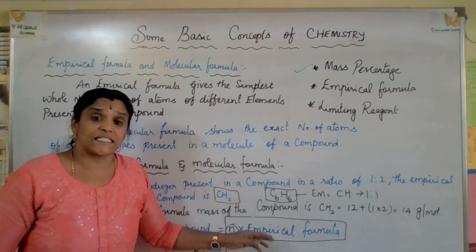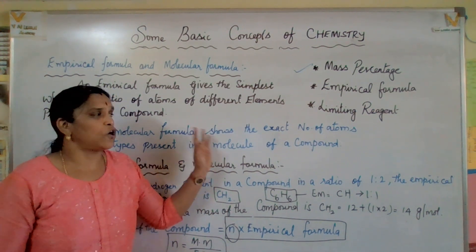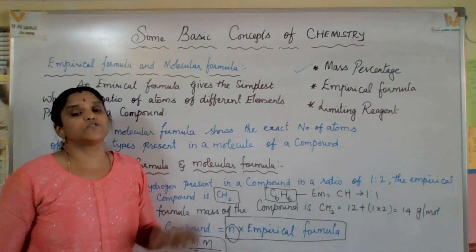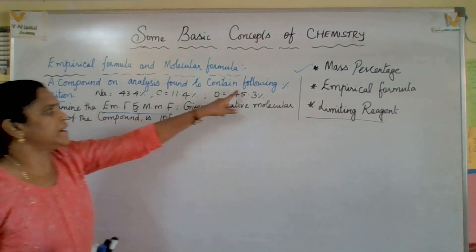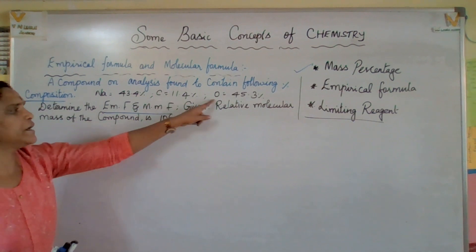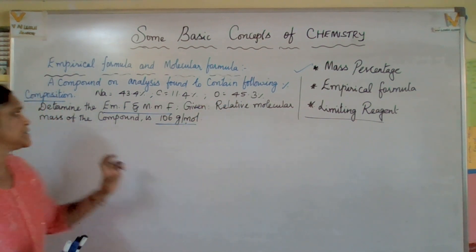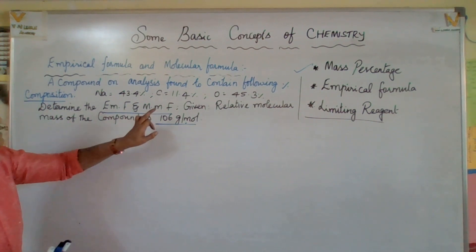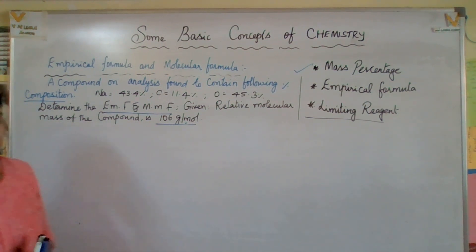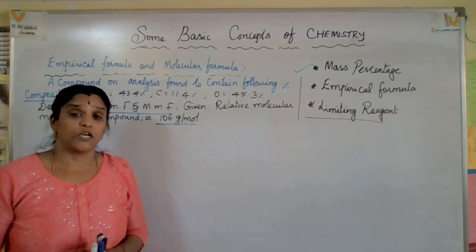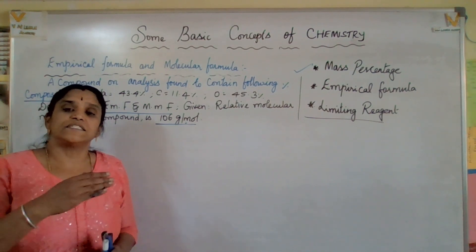Let us solve a problem. A compound on analysis contains: sodium 43.4%, carbon 11.4%, and oxygen 45.3%. Determine the empirical formula and molecular formula. The relative molecular mass is given as 106 gram per mole. We proceed step-wise: list the elements, their percentage compositions, and atomic masses. Then calculate relative number of moles, simplest molar ratio, and simplest whole number ratio.